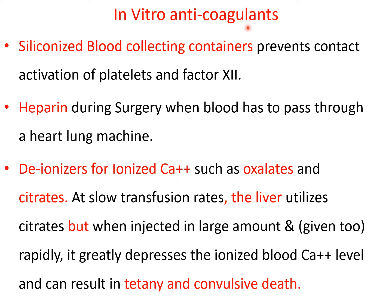Ionized calcium participates in many steps of the clotting cascade — factors 12, 11, and 9 require it. If you remove ionized calcium from the blood using de-ionizers, clotting is prevented, which is useful for blood collecting organizations. Oxalates act as de-ionizers but are toxic, so instead citrates — sodium citrate, potassium citrate, or ammonium citrate — are used to bind calcium and prevent clotting in stored blood.